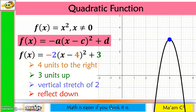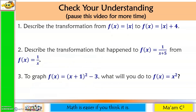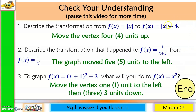Knowing all the transformations is useful because it is applicable to all functions. Let us check your understanding. Here are the correct answers: For number 1, because of plus 4, the vertex moves 4 units up. For number 2, because of plus 5, the graph moves 5 units to the left. For number 3, because of plus 1 the graph moves 1 unit to the left, and because of minus 3, the graph moves 3 units down.